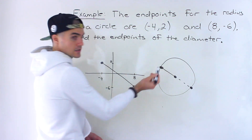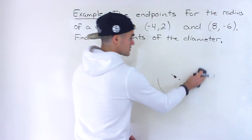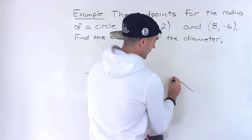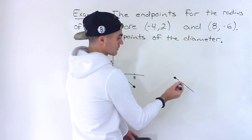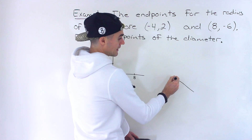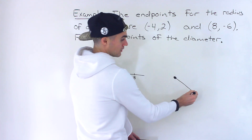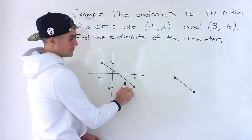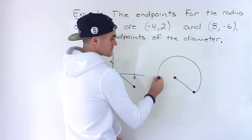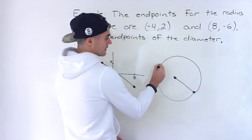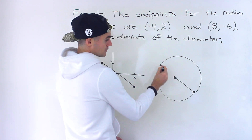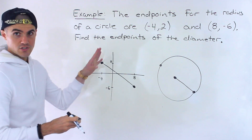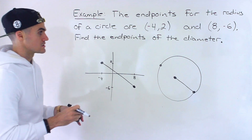But we can also make the other point be the center of the circle. Drawing this line out again — if we let this be the center and this be one endpoint of the diameter, then we draw the circle and the other endpoint of the diameter is going to be out here. So there are going to be two solutions.